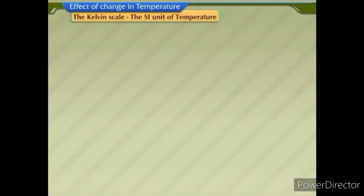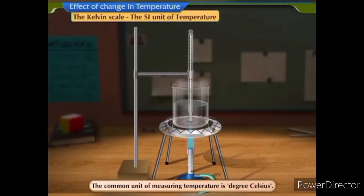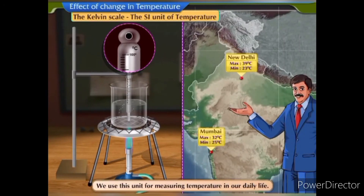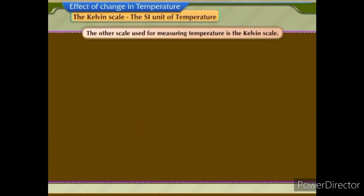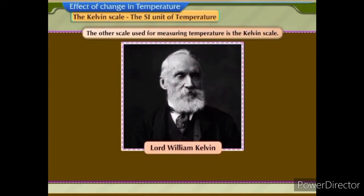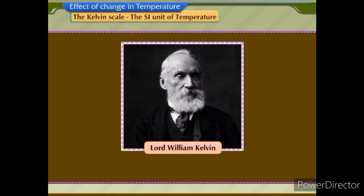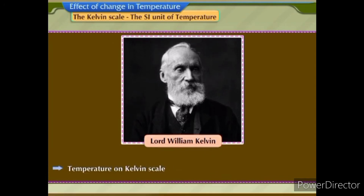Kelvin scale — the SI unit of temperature. The common unit of measuring temperature is degree Celsius, denoted as °C, used in our daily life. The other scale used for measuring temperature is the Kelvin scale, invented by Lord William Kelvin. It is the SI unit of measuring temperature, denoted by the alphabet K. Please note that we do not use the degree sign in the Kelvin scale. All temperatures on this scale are positive. The relation between the two scales is: temperature on Kelvin scale = temperature on Celsius scale + 273.